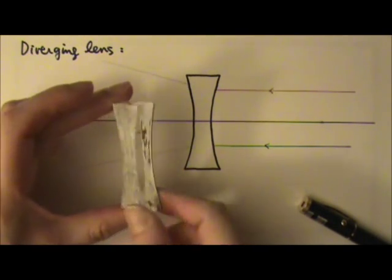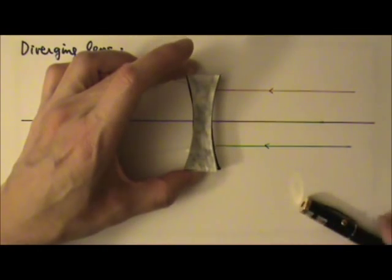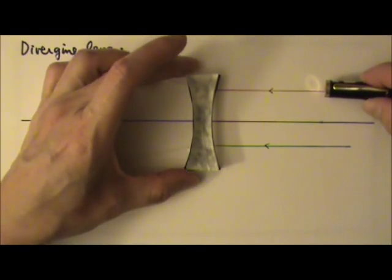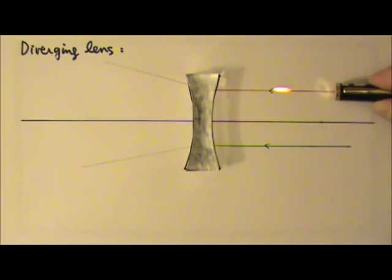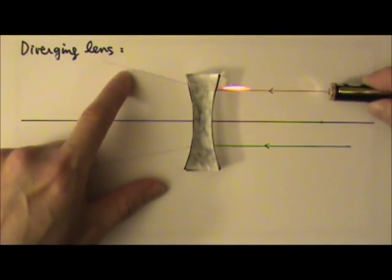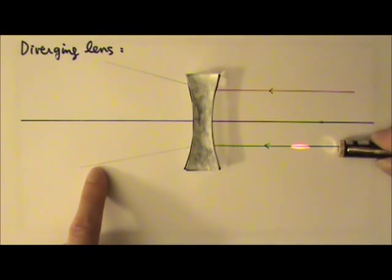Now let's look at the lens that is thinner in the middle. I'm going to put it right here and shine a paraxial ray into this lens. As you can see, this ray gets bent away from the center, it gets diverged. If I shine another paraxial ray into the lens, it also bends away from the center, the ray gets diverged.